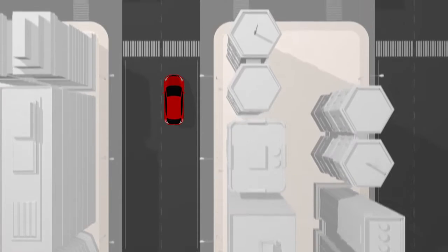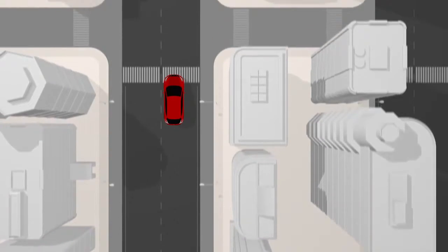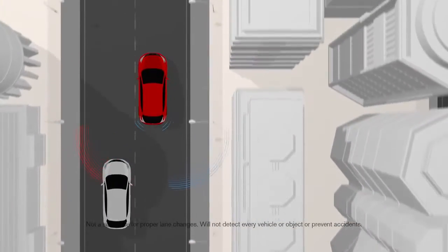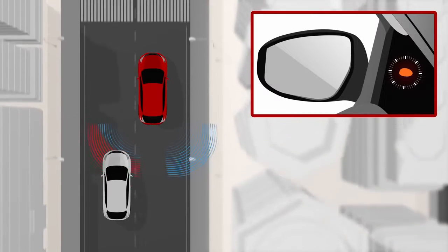Blind spot warning is like an extra look over your shoulder, helping you make your next lane change more safely. The system constantly monitors traffic behind you and gives you a visual warning if it detects a vehicle in your blind spot.